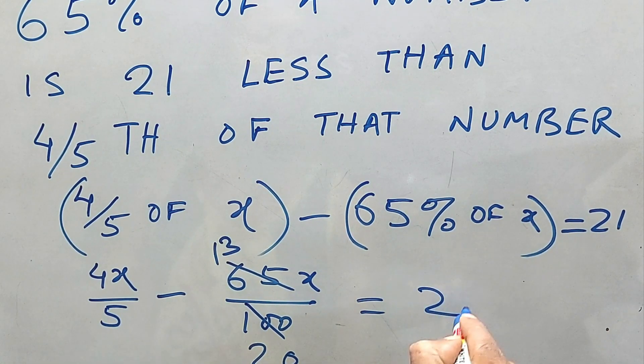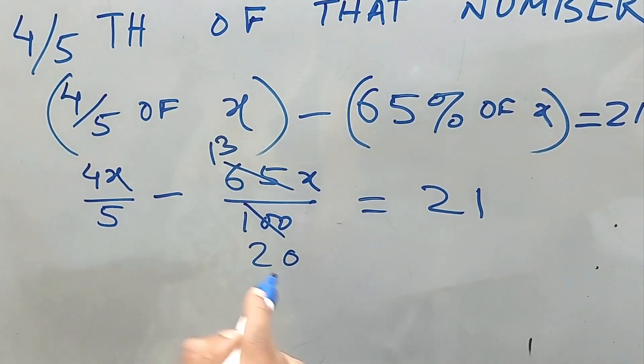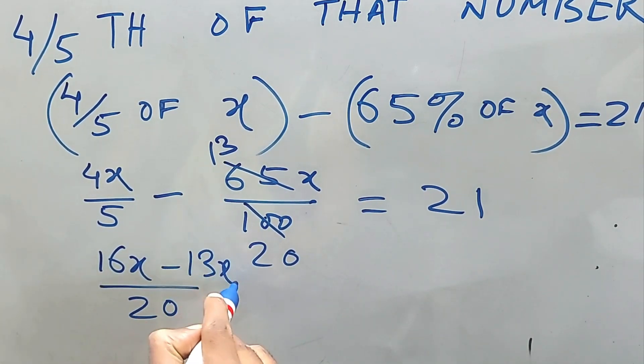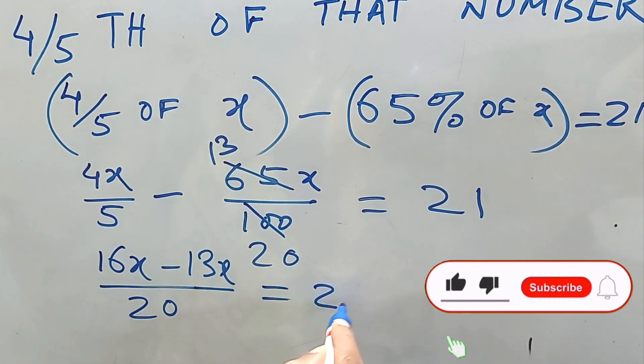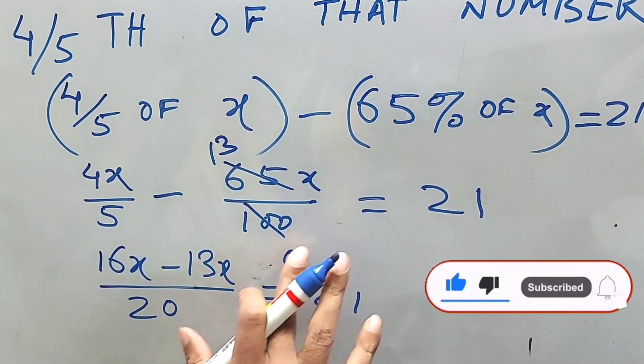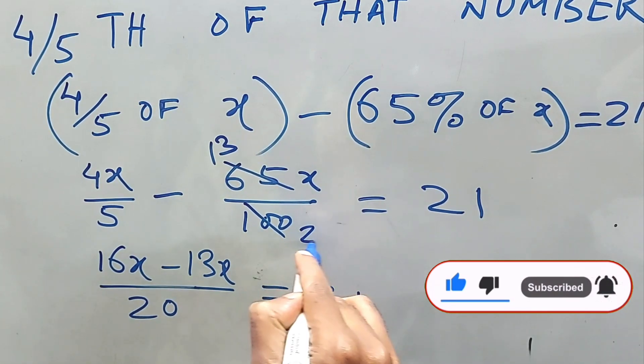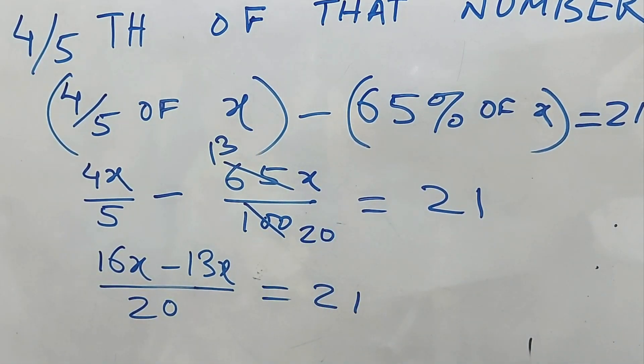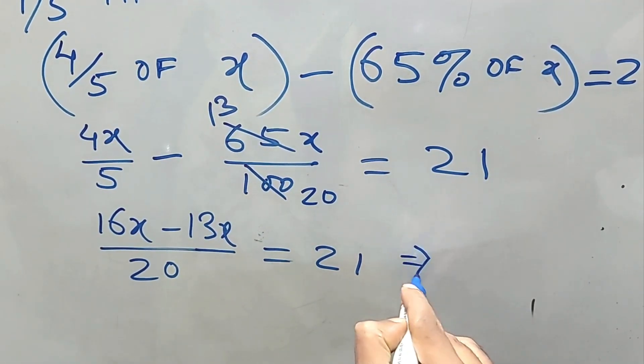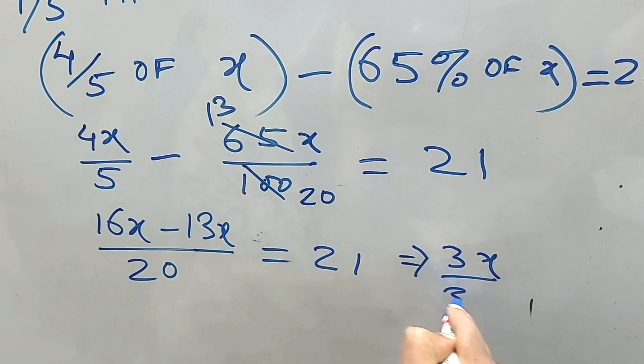Now how to proceed? We just have to subtract 13x by 20 from 4x by 5. The LCM will be 20. Here it will be 16x and this is 13x, and 21. This implies 3x by 20 is equal to 21.